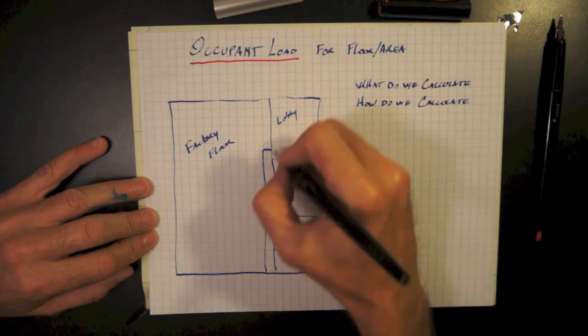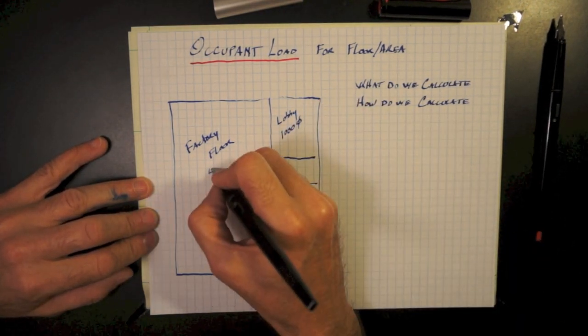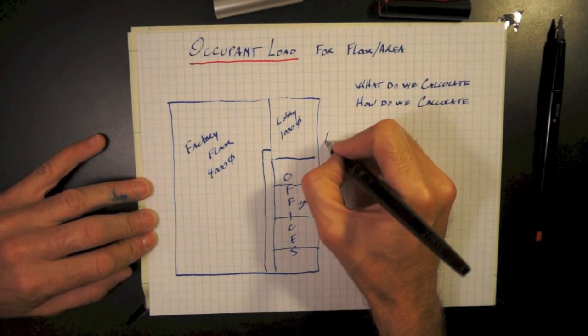So our lobby, 1,000 square feet. All the offices and corridor together, about 2,000 square feet. And the factory floor, let's say it's 4,000 square feet.